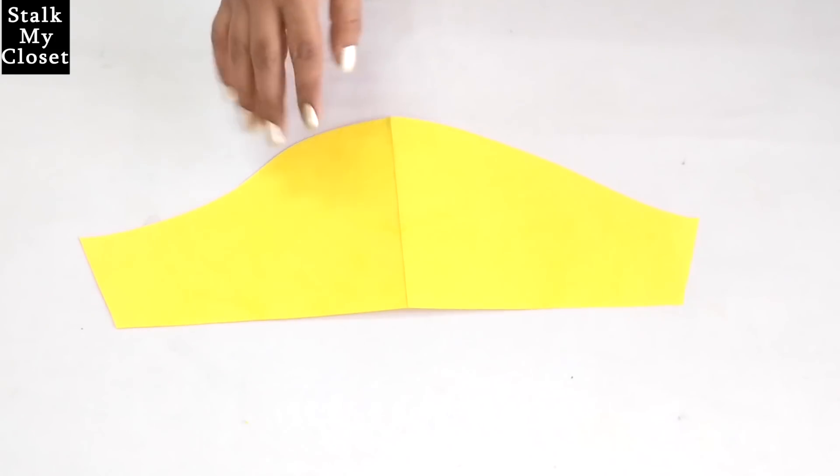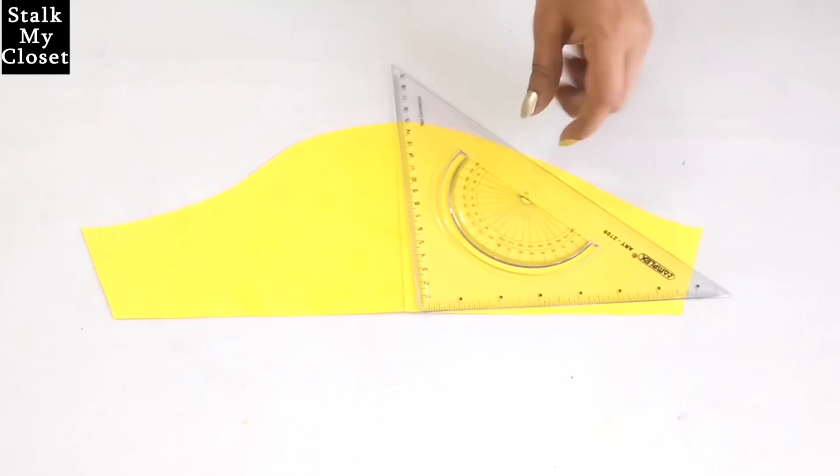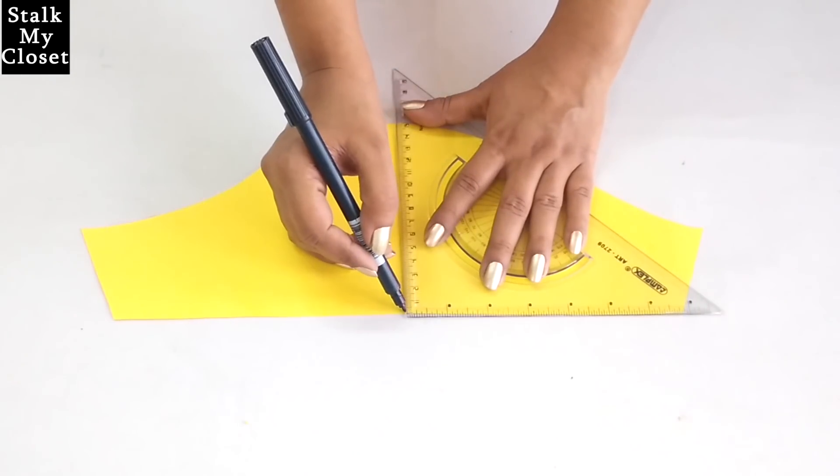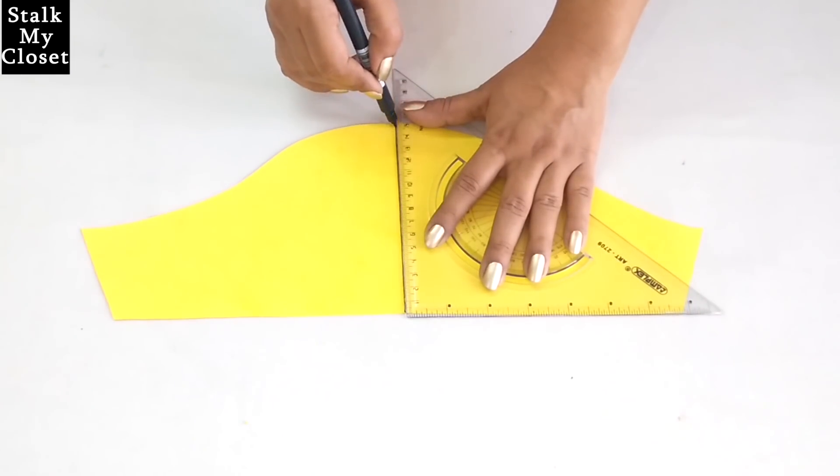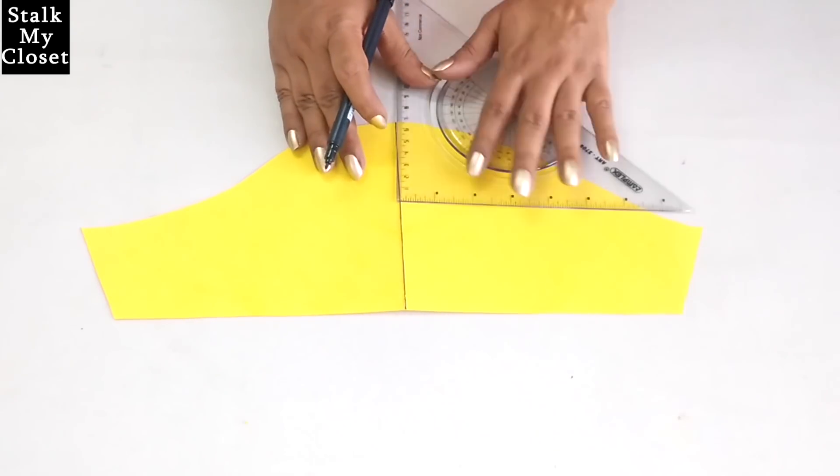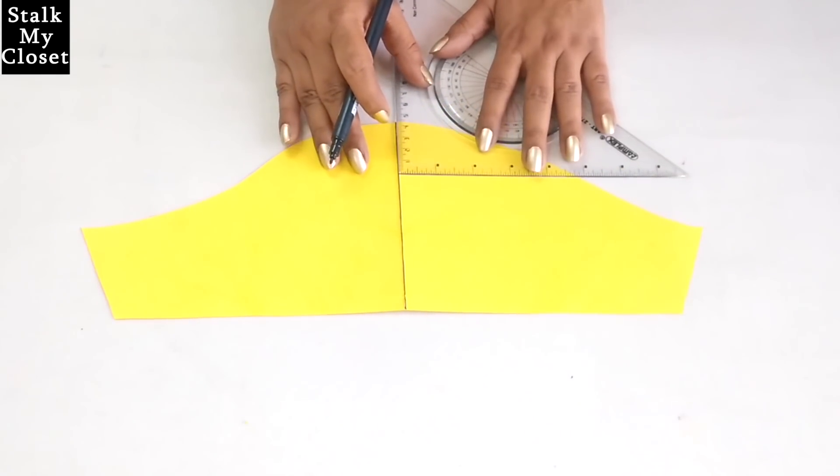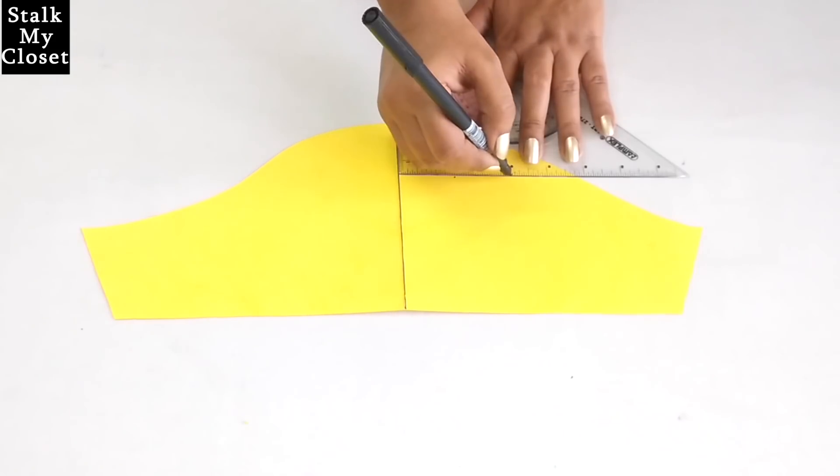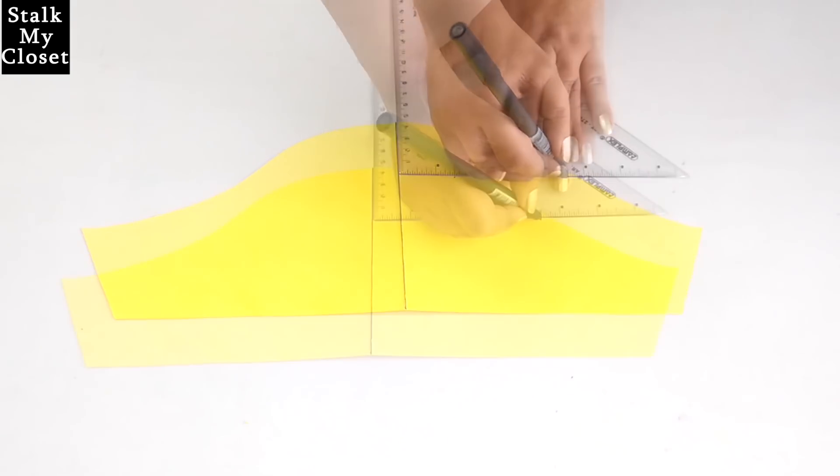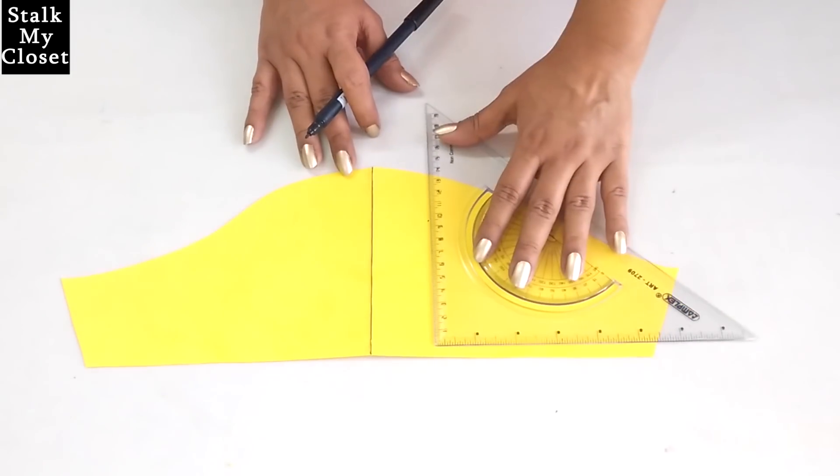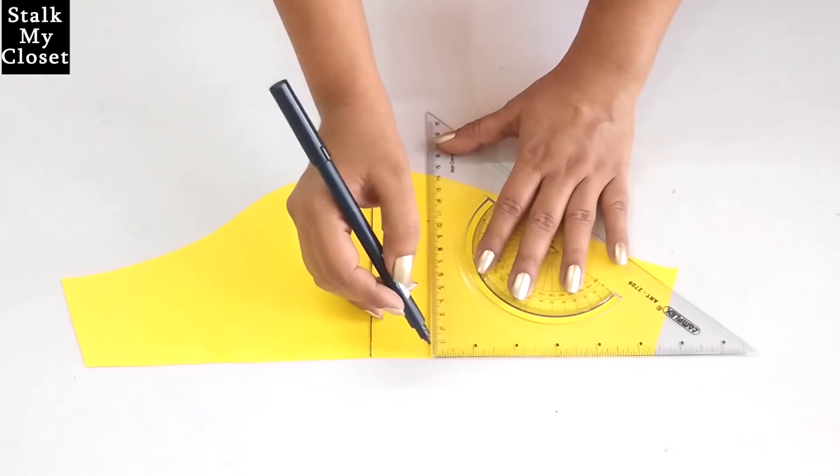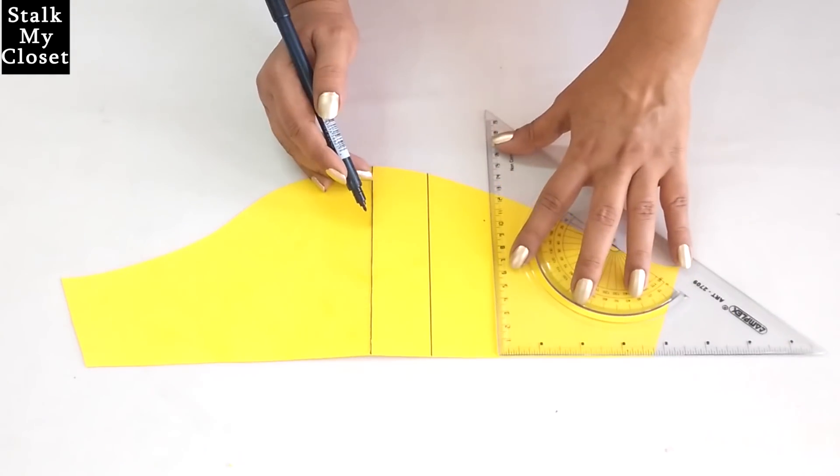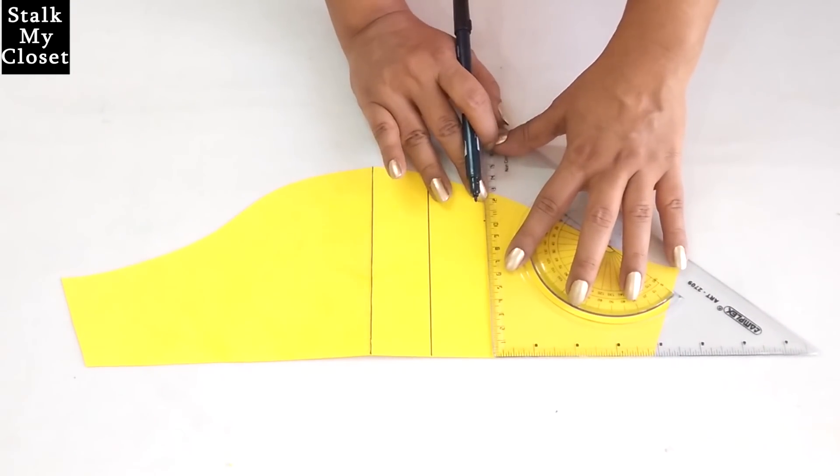I'm taking sleeve length 6 inches. Now mark the center of the sleeve with a vertical line. I'll mark split lines on both sides of center at equal intervals of 1.5 inches. You can take more or less depending on how much volume you want in the sleeves. So I have marked points at 1.5 inches. Now I'll extend these points.